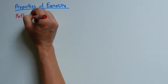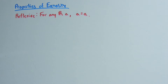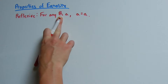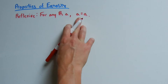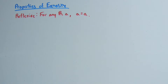Now let's go over the properties of equality. The first property is reflexive. The reflexive property says for any real number a — and remember that symbol ℝ represents the real numbers — a is equal to a. For example, if a was 4, then 4 equals 4. If a was an expression such as x plus 2, then x plus 2 is equal to x plus 2.